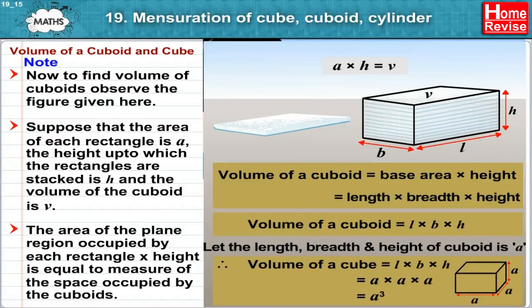Therefore, volume of cube is equal to L into B into H, which is equal to A into A into A, which is equal to A cube. Since all sides of cubes are equal.